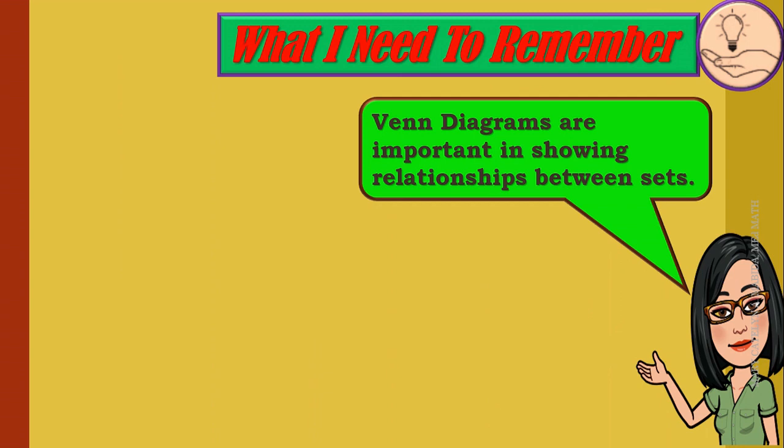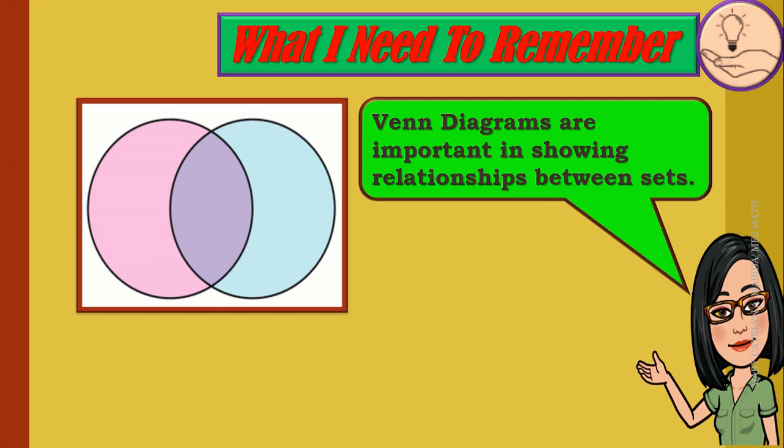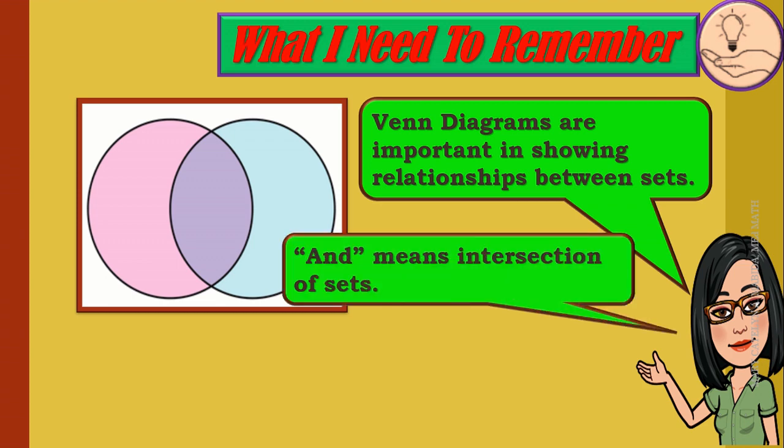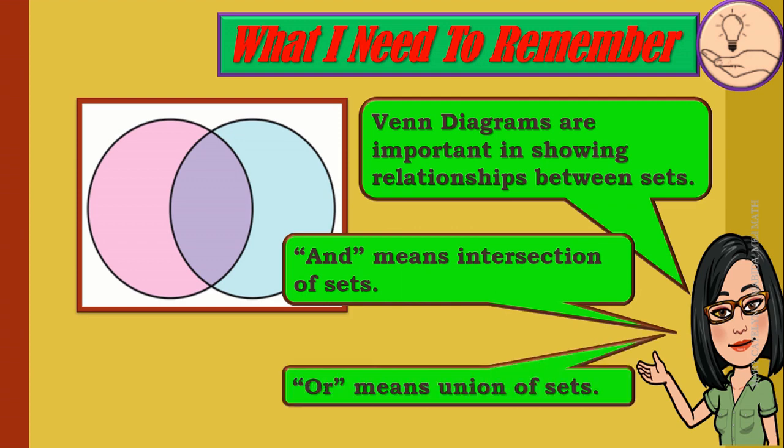Now this time, this is what you need to remember. That Venn diagrams are important in showing relationships between sets. And means intersection of sets. Or means union of sets.